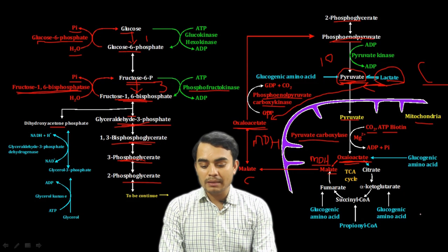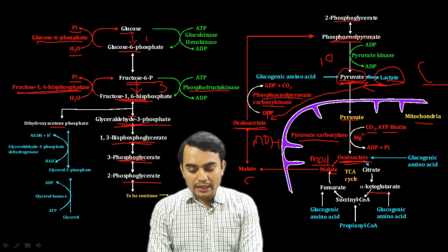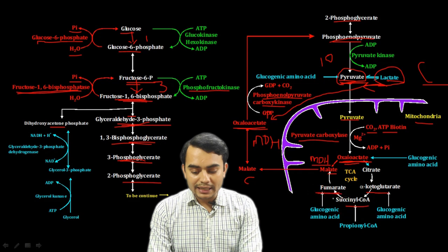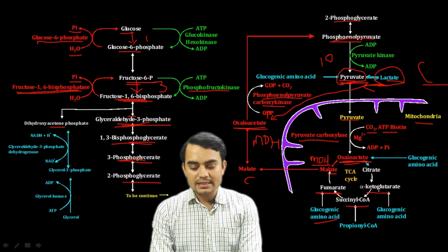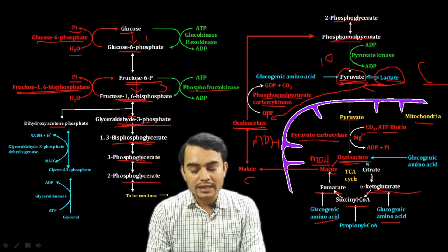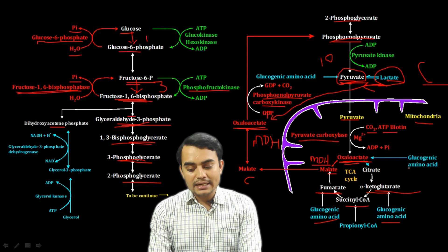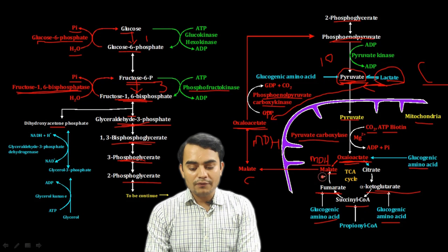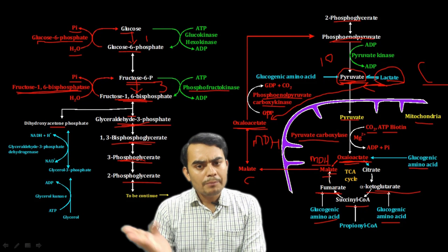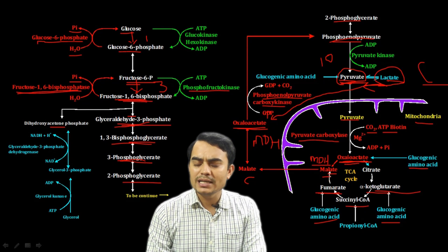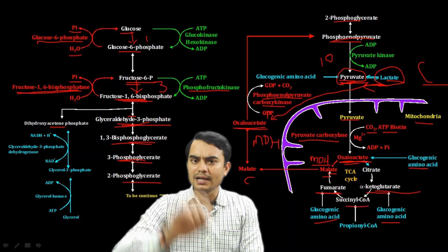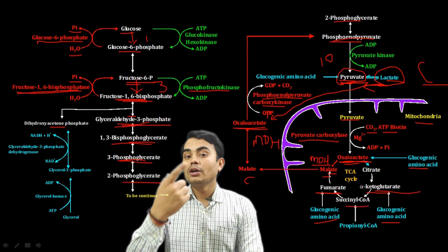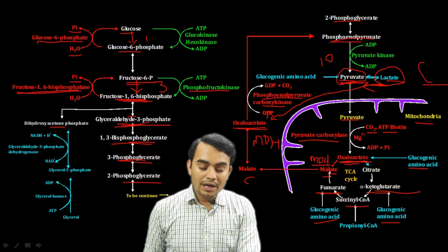From glucogenic amino acids — such as those that form alpha-ketoglutarate, succinyl-CoA, fumarate, or oxaloacetate — these enter the TCA cycle and ultimately form malate. The malate then moves to the cytosol, forms oxaloacetate, and then phosphoenolpyruvate, and glucose synthesis continues from there.